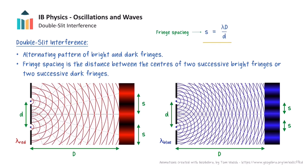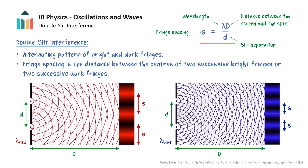The fringe spacing depends on three variables: namely the wavelength of the waves lambda, the distance between the slits and the screen D, and the slit separation d, as given by the equation in the data booklet. So in these animations, the blue fringes have a smaller fringe spacing than the red fringes because blue light has a shorter wavelength than red light. As we are looking at fringes close to the centre of the pattern, this equation holds true and the fringes are evenly spaced out.